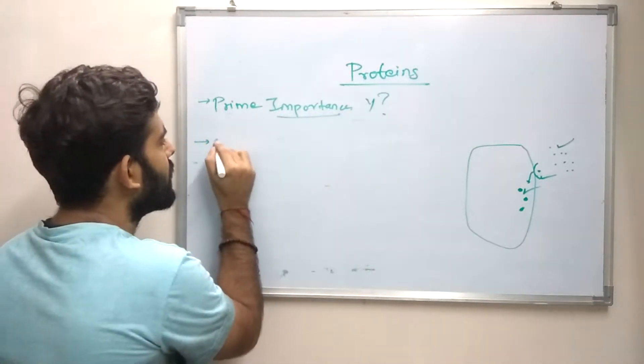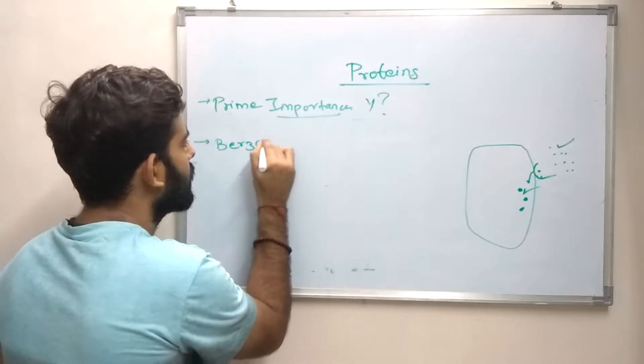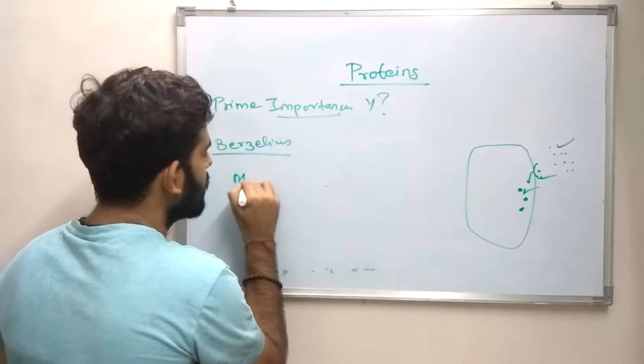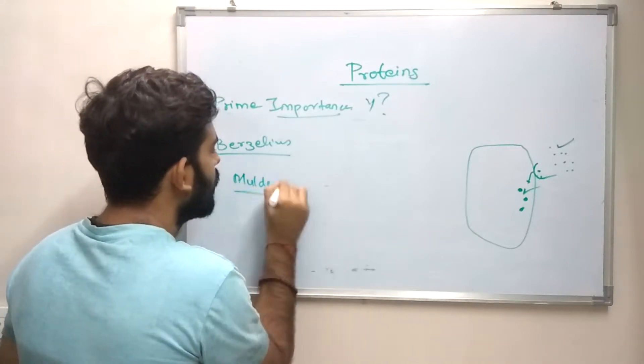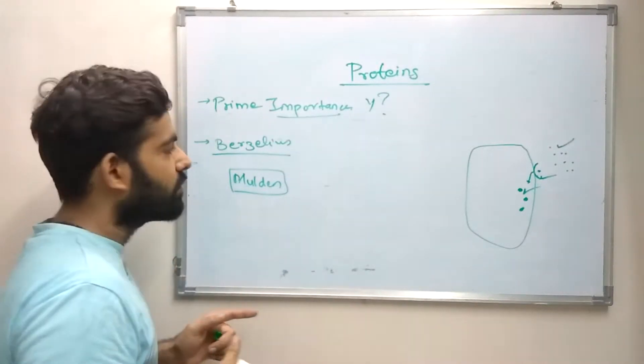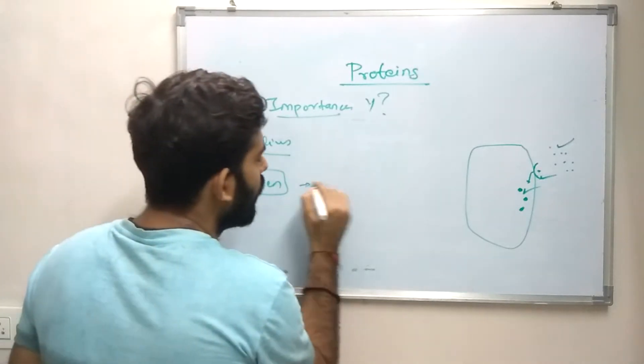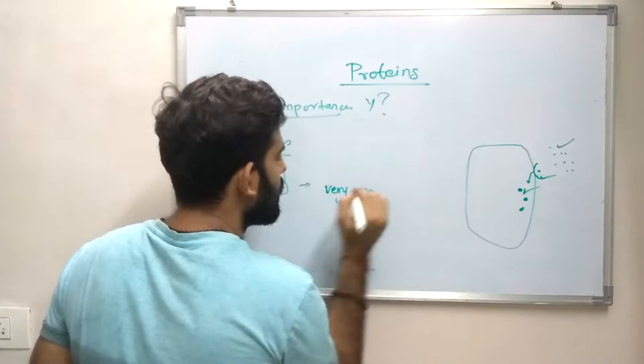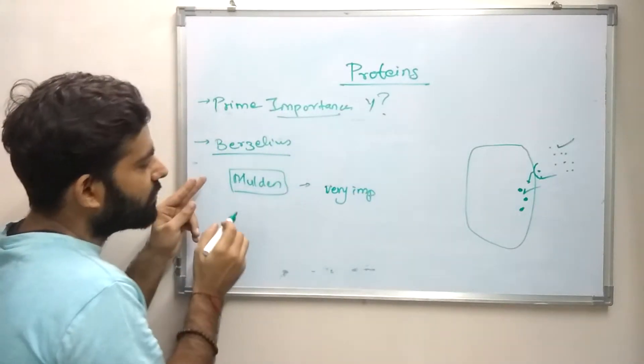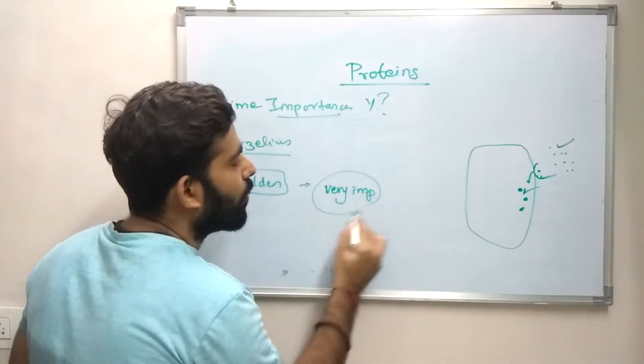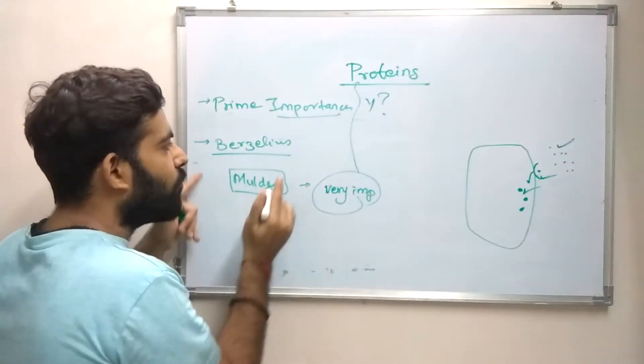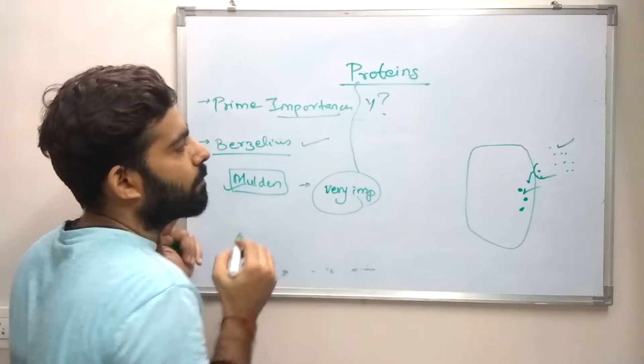Now the proteins, the name was suggested by Berzelius. Berzelius suggested to Mulden, who was working on certain components, certain molecules which were of very prime importance as proteins. So the name was suggested by Berzelius but it was named by Mulden.